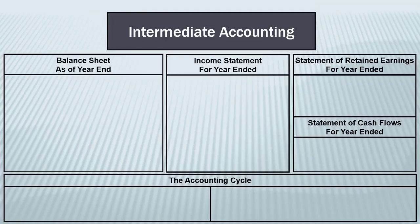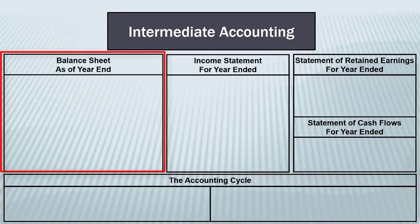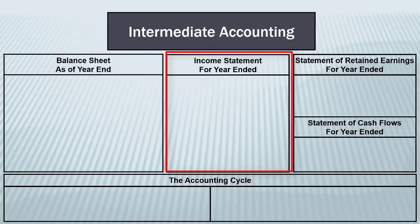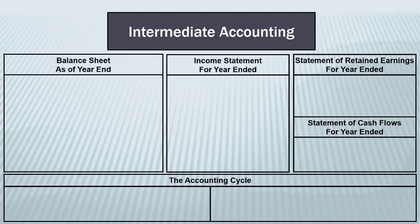Instead, we're going to break it down into a very specific framework. We're going to start by talking about the accounting cycle. Then we'll talk about the balance sheet and the assets that a business owns and the way that they pay for those assets. Then we'll talk about the income statement — the more advanced calculations that are part of calculating income from operations — some other gains and losses, calculating taxes, and then getting our earnings per share. Finally, we'll talk about the last two financial statements: changes to retained earnings using the statement of retained earnings, and then the statement of cash flows to wrap everything up.